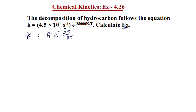We can compare these two equations. The A value corresponds to 4.5 multiplied by 10 to the power 11. The exponential term e to the power of negative Ea over RT in the Arrhenius equation corresponds to e to the power of negative 28,000 K divided by T in the given equation. Since we want to calculate the energy of activation, we compare these exponential parts.